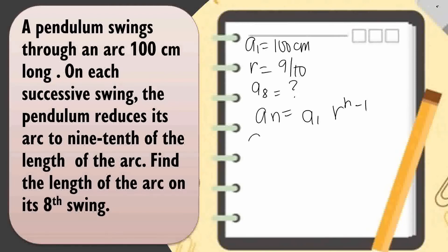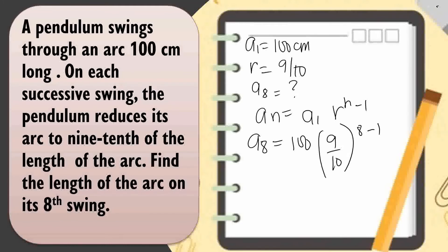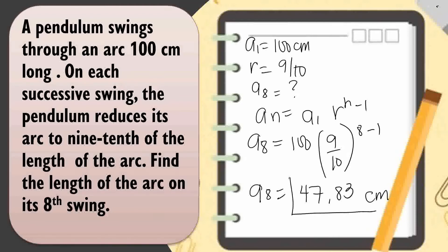So a sub 8 equals 100 times 9 over 10 raised to 8 minus 1. Calculating this gives us 47.83 cm. So on the 8th swing, the length of the arc is 47.83 cm.